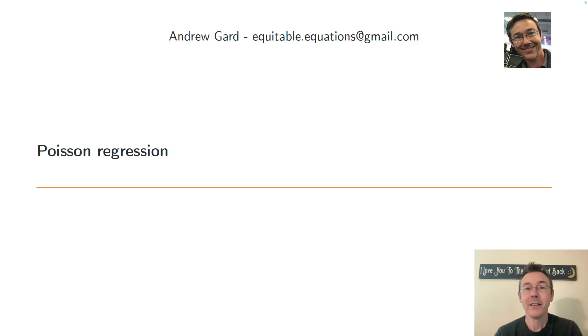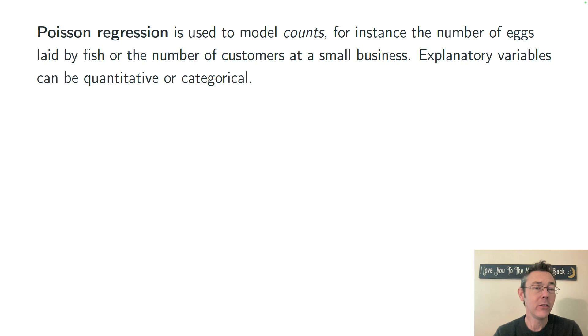Hey everybody. Today we're talking about Poisson regression, which after logistic regression is the most common sort of generalized linear model that you'll encounter in the wild. It's used to model counts.